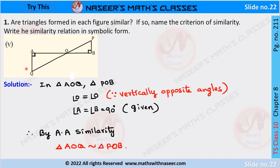We check whether the two triangles in fifth bit are similar or not. We have two triangles AOQ and BOP. In these two triangles, angle O equals angle O — vertically opposite angles are equal. Also, angle A equals 90 degrees and angle B equals 90 degrees. By Angle-Angle similarity, triangle AOQ is similar to triangle POB.